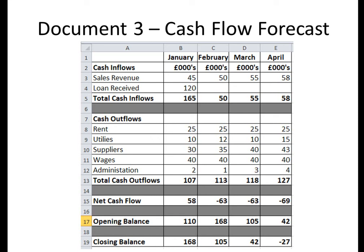The closing balance from January becomes the opening balance for February. It's really important on cash flow forecasts that you take notice of the sign — sometimes negative is shown with a minus sign, sometimes with brackets. In February, the net cash flow is negative, meaning the business spends more than it receives. So we get a net cash flow of minus $63,000, add $168,000, giving a closing balance of $105,000, which becomes the opening balance for the next month.